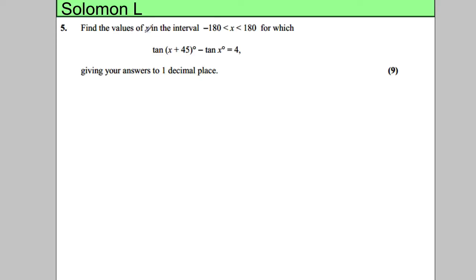In this question we're asked to find the values of X between negative 180 and 180 for which the following is true. Give your answer to one decimal place. When I look at this I firstly think we have tan of X plus something, so it's an addition formula.